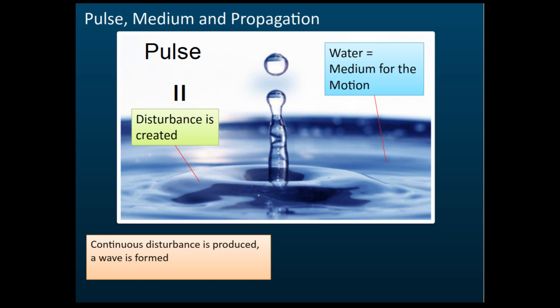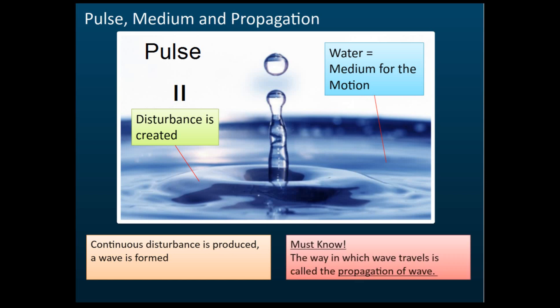The way the wave moves or travels is called the propagation of the wave. Students often ask what propagation means — propagation is simply the motion of the wave, how the wave moves. So that is what is meant by a pulse, a medium, and propagation.